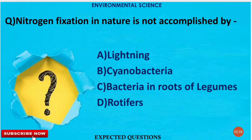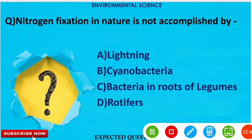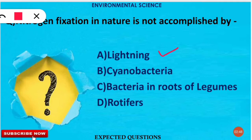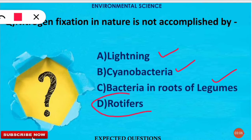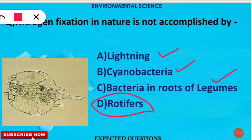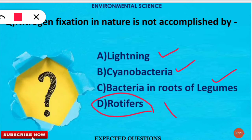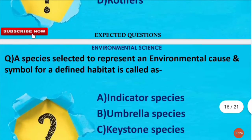The next question is: nitrogen fixation in nature is NOT accomplished by which of the following? Lightning causes nitrogen fixation, cyanobacteria are also known for nitrogen fixation, and bacteria found in legume plant roots also fix nitrogen. However, rotifers are microscopic aquatic animals — commonly called wheel animals — and nitrogen fixation does not occur through them.